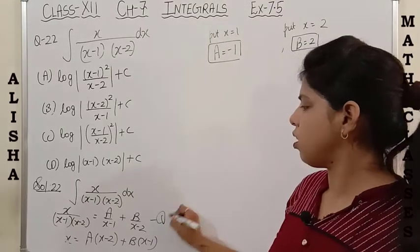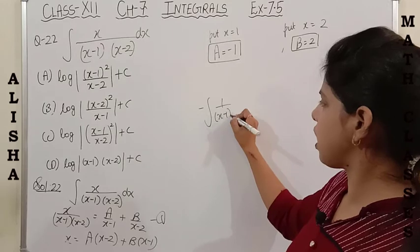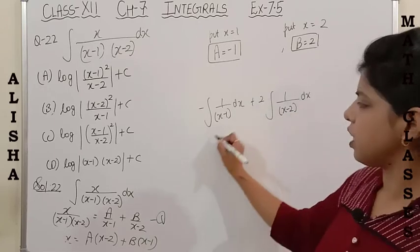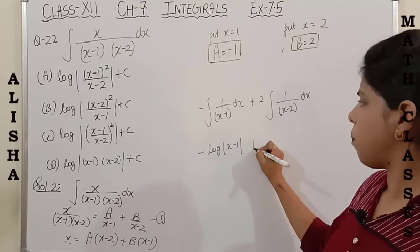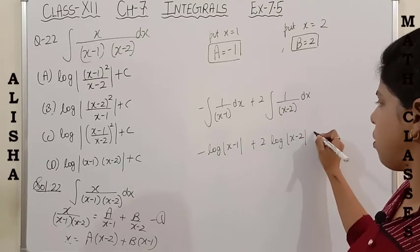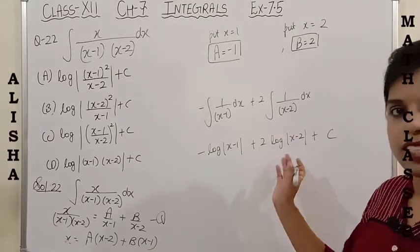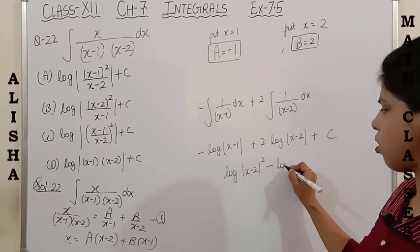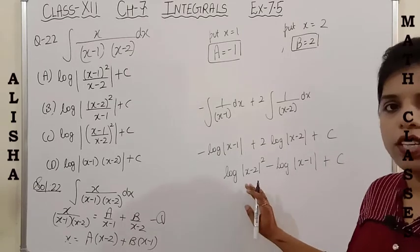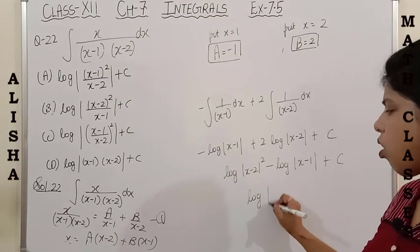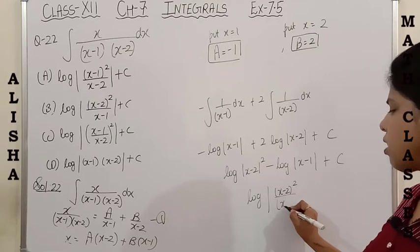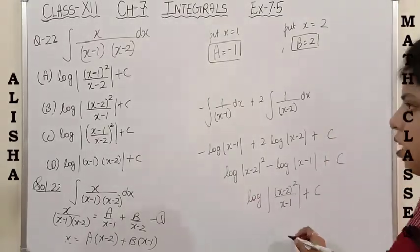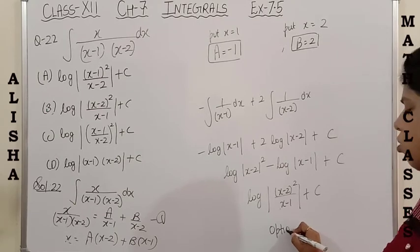Using these values in equation 1: A = −1 so we get −1 integral of 1/(x−1) dx plus 2 integral of 1/(x−2) dx. Integrating: −log(x−1) + 2 log(x−2) + C. Using m·log n = log n^m, this becomes log(x−2)² − log(x−1) + C. In the form log(m/n), the answer is log[(x−2)²/(x−1)] + C. This matches option B, so the correct answer is option B.